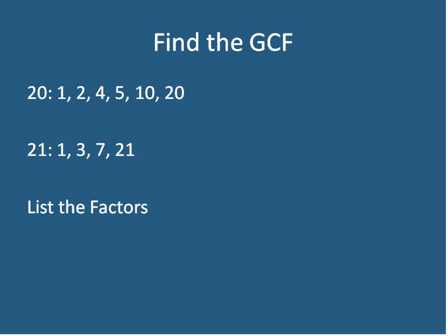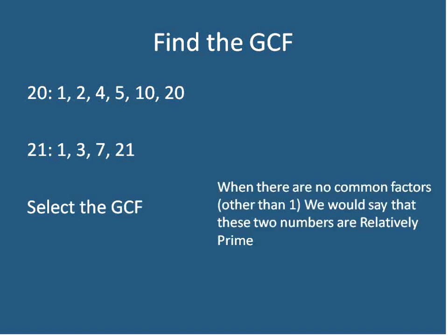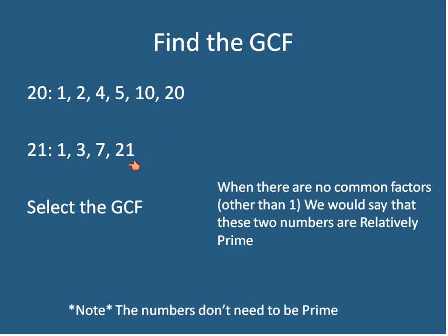When you get two numbers that have no common factors, we say that these two are relatively prime. If two numbers have no common factors other than one — and we don't count one — we can't select a greatest common factor. So compared with each other, or relative to each other, they are prime. 20 and 21 are both composite numbers; they both have factors, but they have nothing in common. So we would say these two numbers are relatively prime — there's no common factor, therefore no greatest common factor.